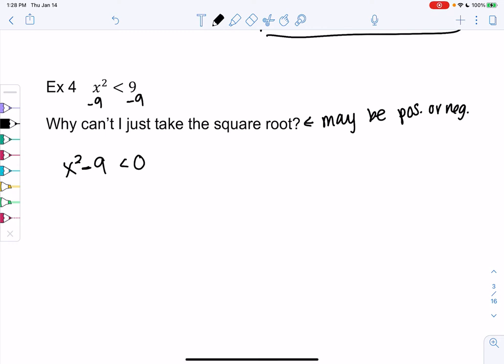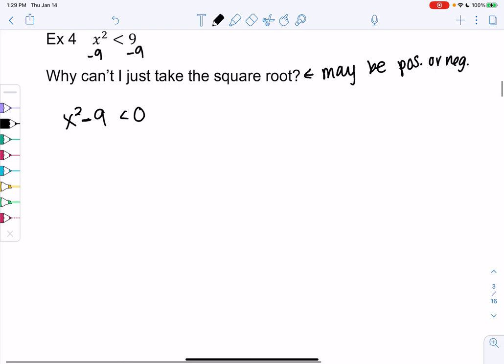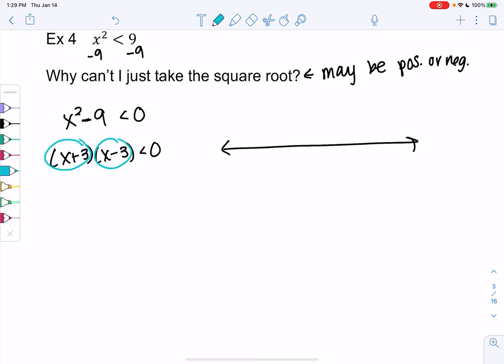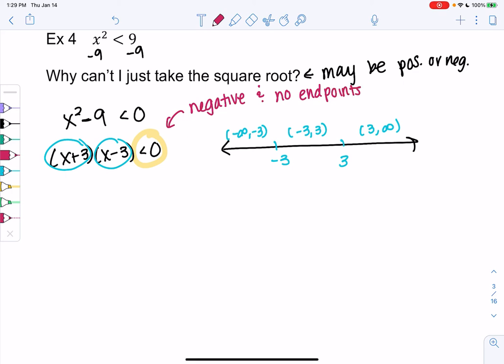It has the same issues. It may be positive or negative, and we don't want to deal with multiple cases. Subtracting 9 and using this trick will be way more efficient. Anything that's not linear, as soon as x has a power, we like to do zeros and sign charts instead. x squared minus 9 is less than 0 gives me x plus 3 and x minus 3. That would give me negative 3 and 3 on the number line. Our intervals will be negative infinity to negative 3, negative 3 to 3, and 3 to infinity.